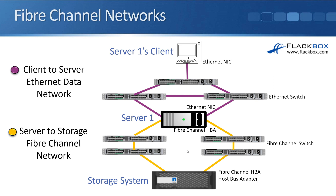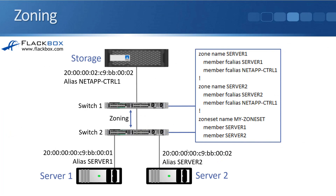That makes things more secure and more stable. In the configuration example, I've got my storage system at the top and its WWPN is that long address just underneath it, so I've configured an alias to make things more convenient. The alias for the storage system is NetAppController1. Then server1 at the bottom has its WWPN with a configured alias of server1, and server2 in the bottom right has its alias of server2.